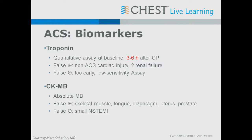What about biomarkers? All of you are conditioned to order biomarkers in any patient with shortness of breath or chest pain resembling myocardial injury — getting them is not the issue; interpreting the results is. A quantitative troponin assay should be sent three to six hours after the onset of typical chest pain. With newer ultra-sensitive assays, troponins are detectable even in asymptomatic populations, so they're likely to be elevated very early into the event.